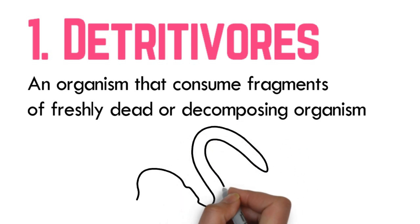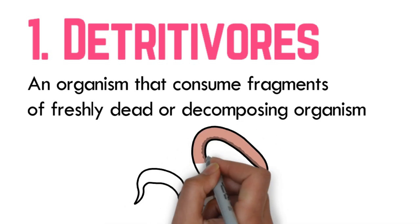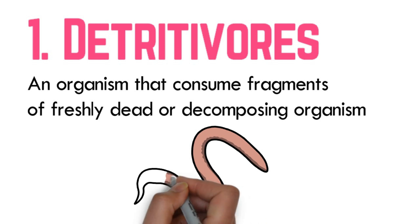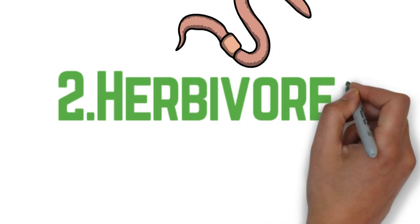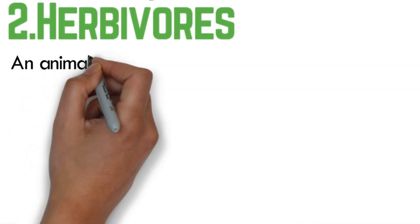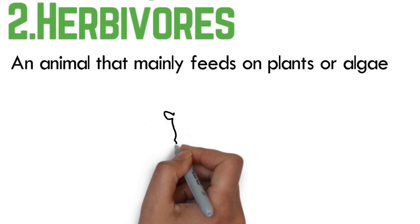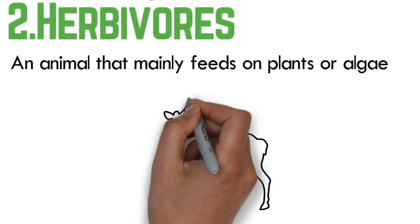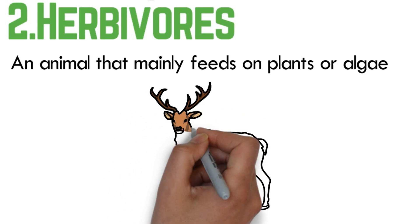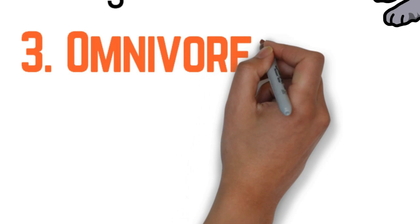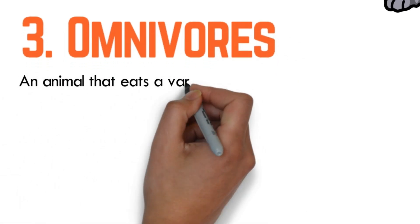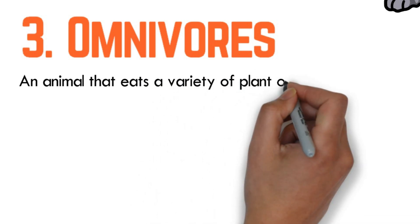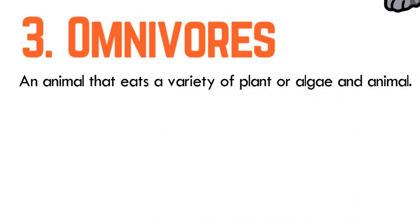The second type of heterotroph is herbivore. A herbivore is an animal that mainly feeds on plants or algae; it is usually a primary consumer classified at the second trophic level. The third type is omnivore. An omnivore is an animal that eats a variety of plants or algae and animals; it can be either a secondary or tertiary consumer, usually located at the second or third trophic level.